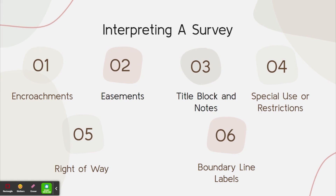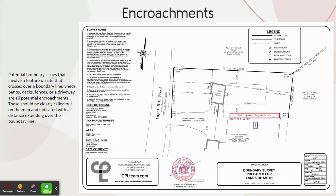Now we'll look at six major parts of the map that will help you interpret your survey. First is encroachments. These are potential boundary issues that involve a feature on site that crosses over a boundary line. Sheds, patios, decks, fences, or a driveway are all potential encroachments. These should be clearly called out in the map and indicated with a distance extending over the boundary line. In this example, we don't have an encroachment, but we have a chain link fence that falls directly on the property line and it's called out as such.